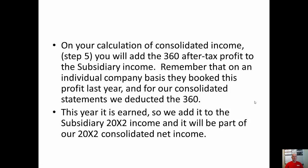Now when you actually go to do the calculation in step five — calculation of consolidated net income — you're going to have to take that $360 after-tax profit and add it to the subsidiary income. Remember it was the subsidiary that made the original sale. So last year we deducted this from the subsidiary income. This year, since it's earned, we add it. So that's the adjustment in step five.